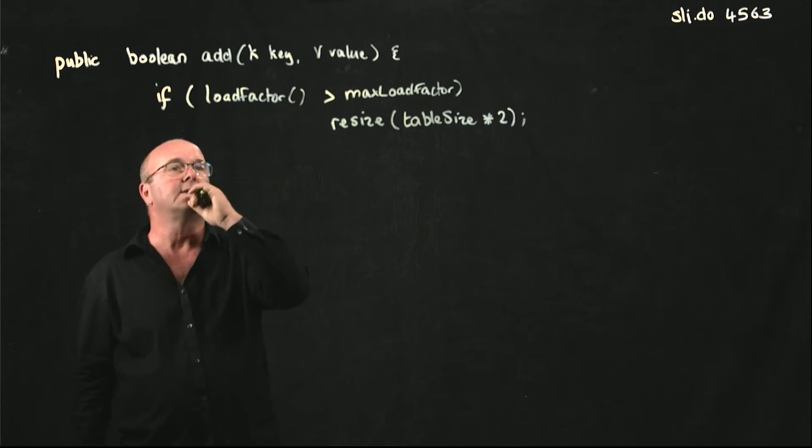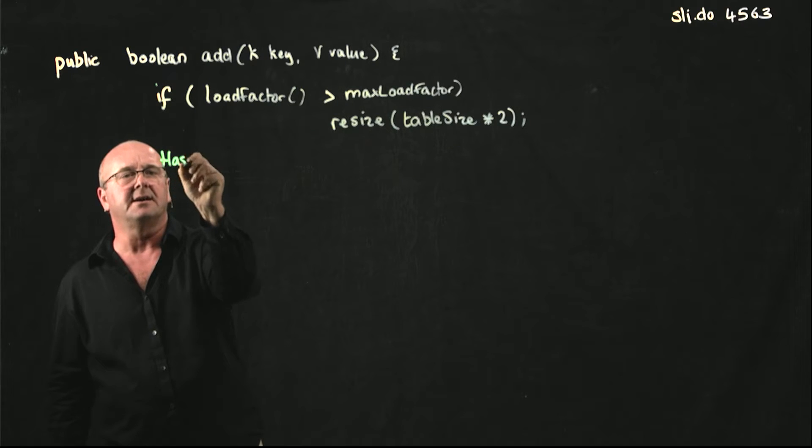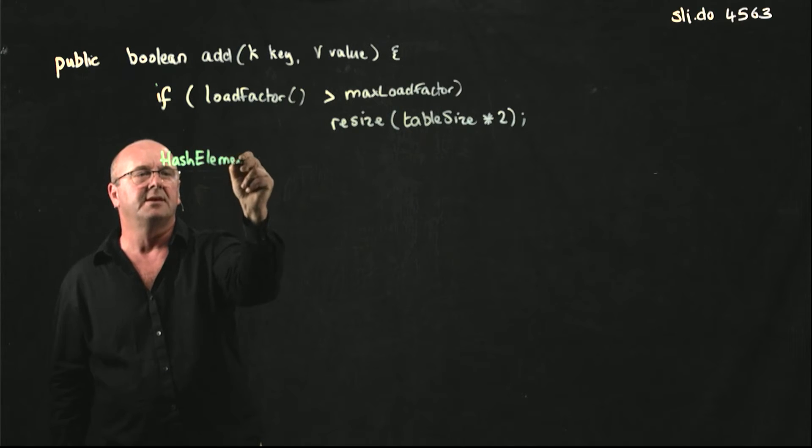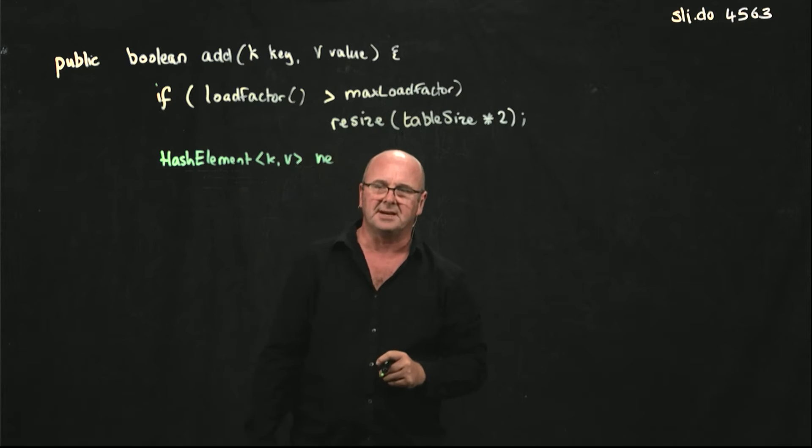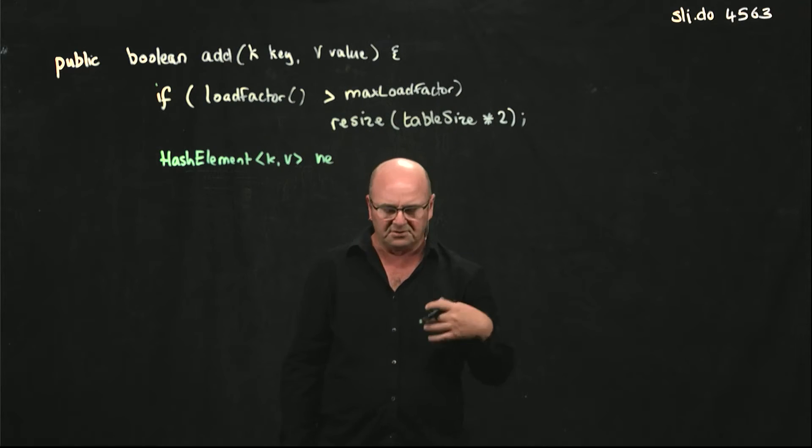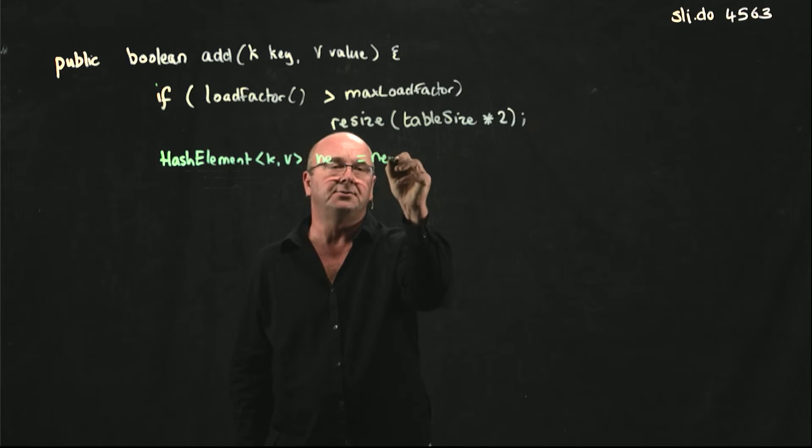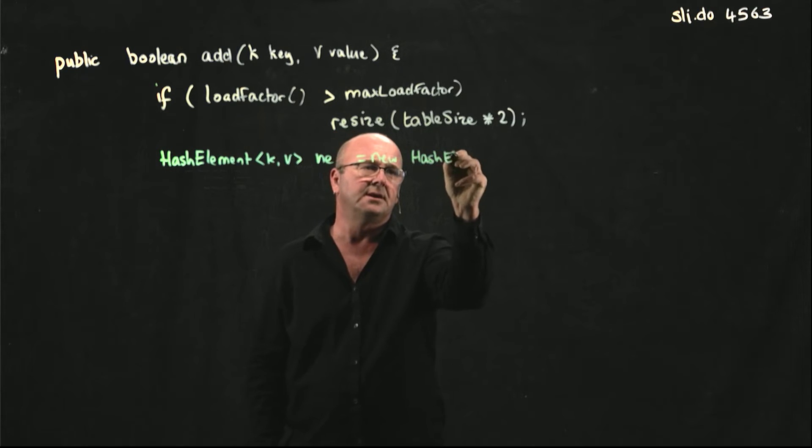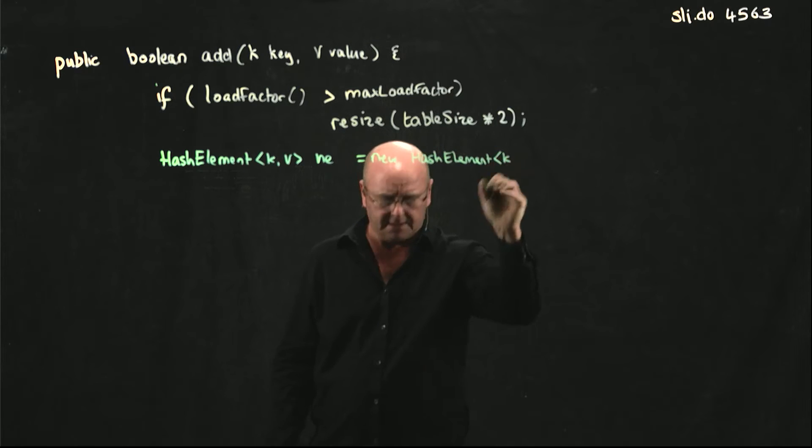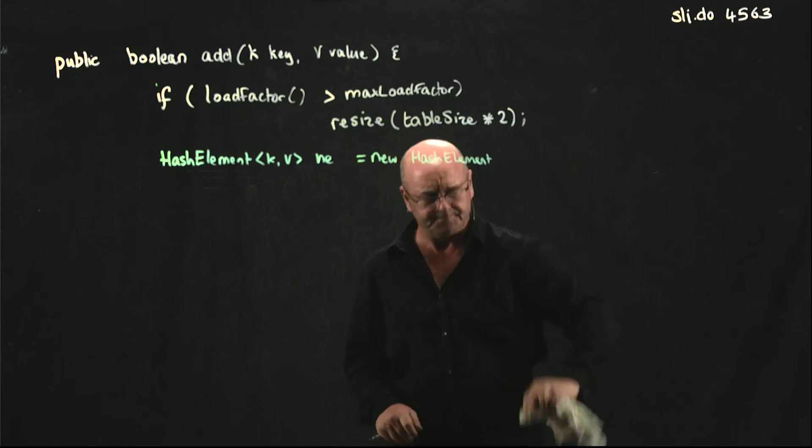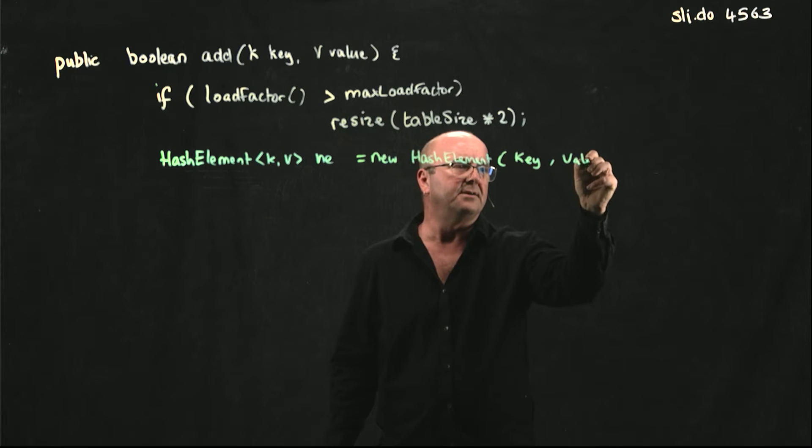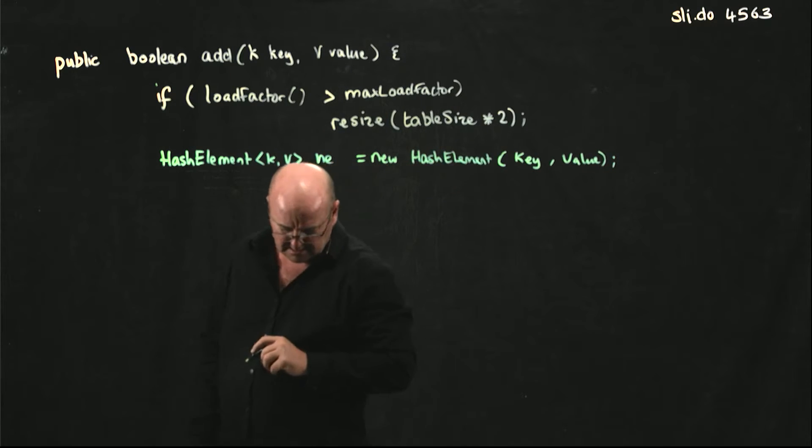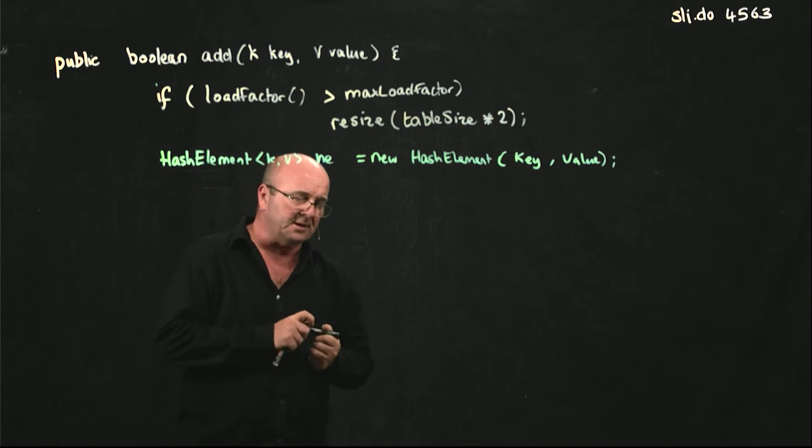Now we've got our key and our value. So let's create an element that we're going to store. So hash element kv, and I'm just going to call it he. I'm pretty useless at variable names, I tend to make them short. But hopefully, something that reminds me of what's going on. And that's just a new hash element. You don't need the kv for a constructor. Key and value.